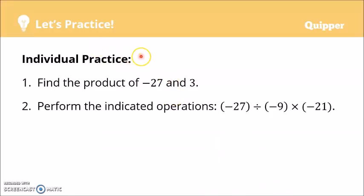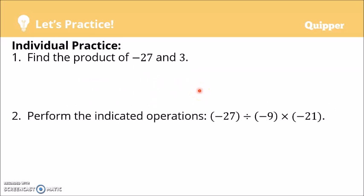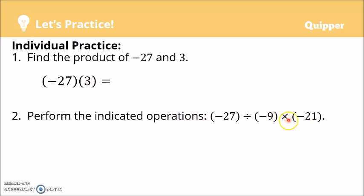Individual practice. Find the product of negative 27 and 3. Negative 27 times 3 can be written using two sets of parentheses: (-27)(3). When using two parentheses, the multiplication symbol × is no longer needed because they are understood as multiplication. Negative times positive, so the answer must be negative. 27 times 3 is 81, so the answer is negative 81.